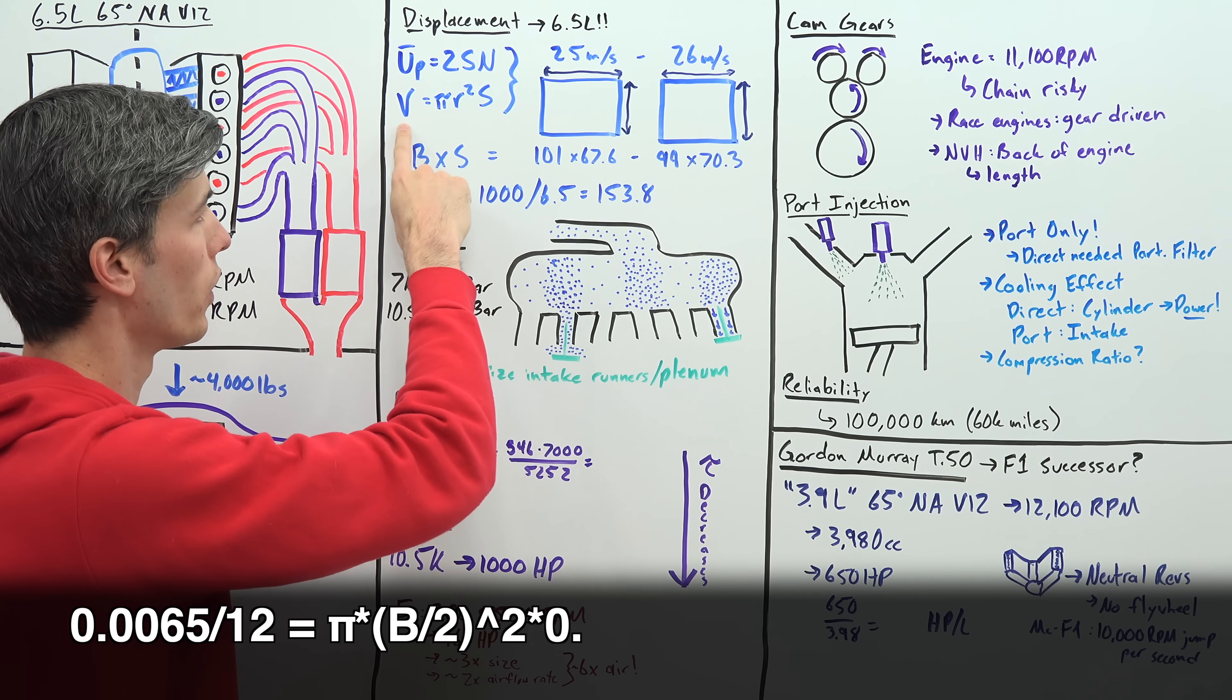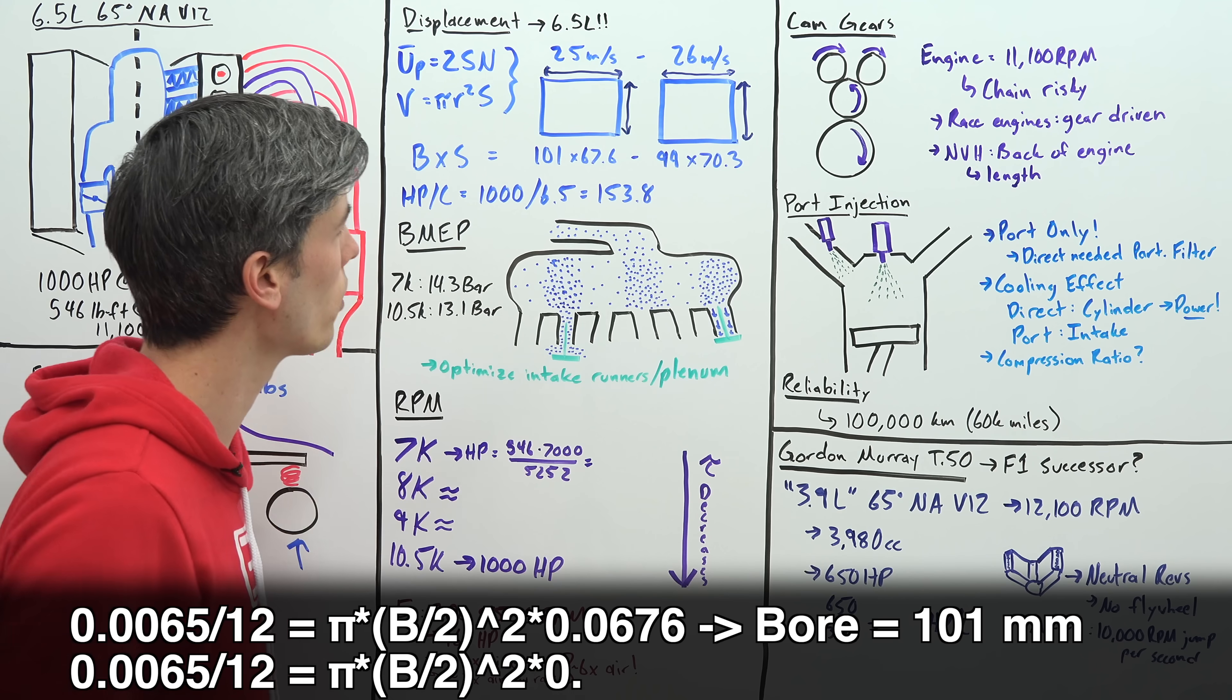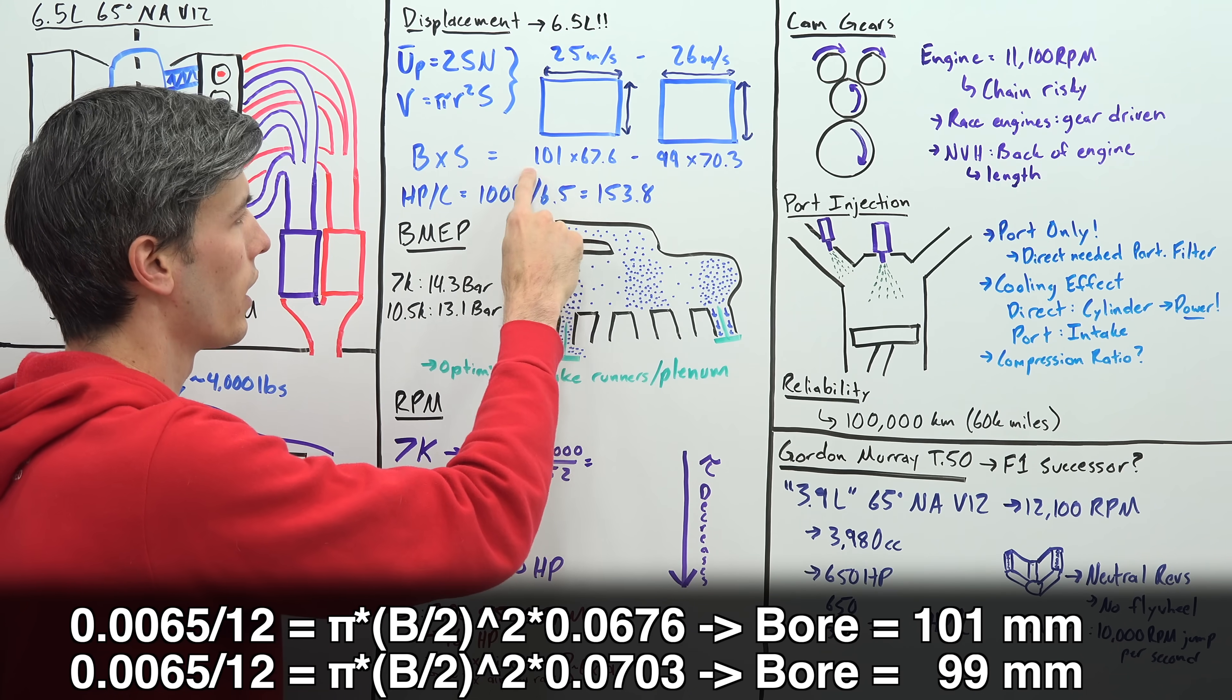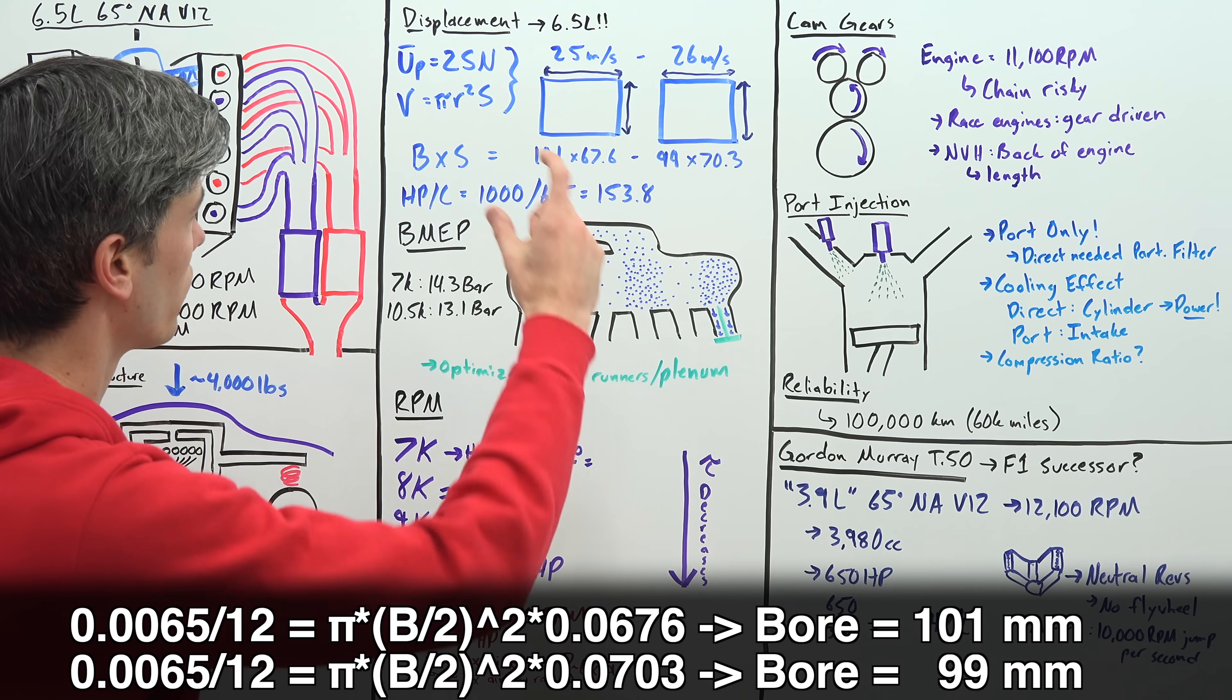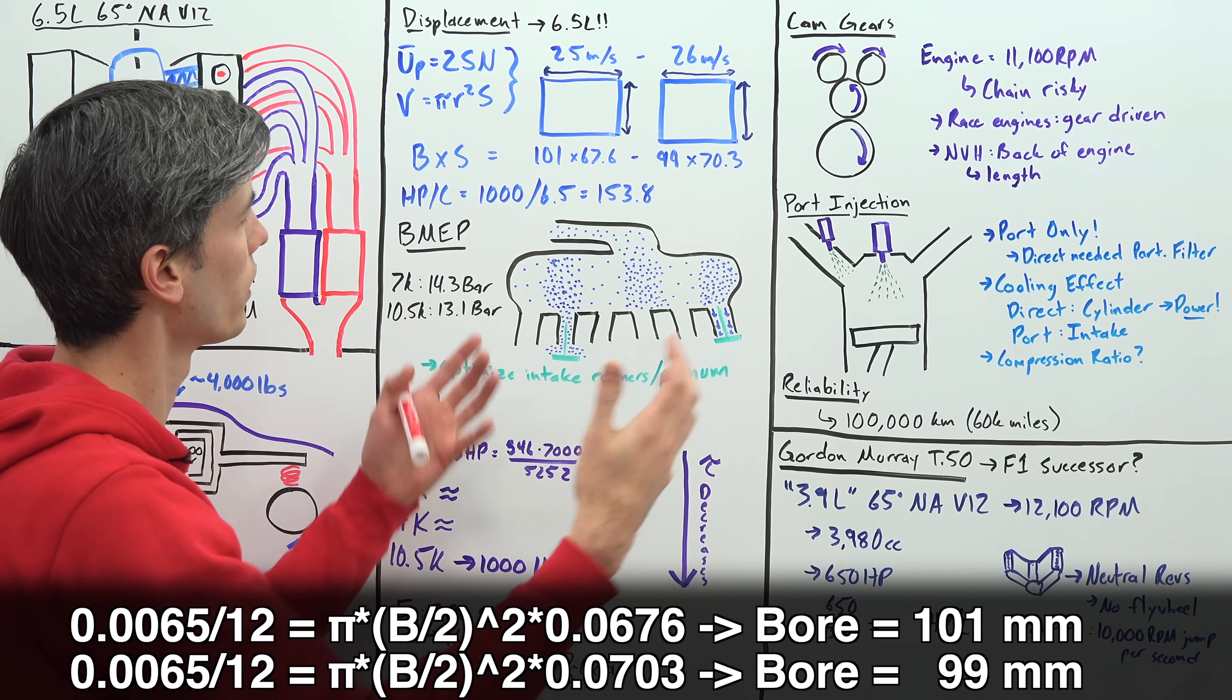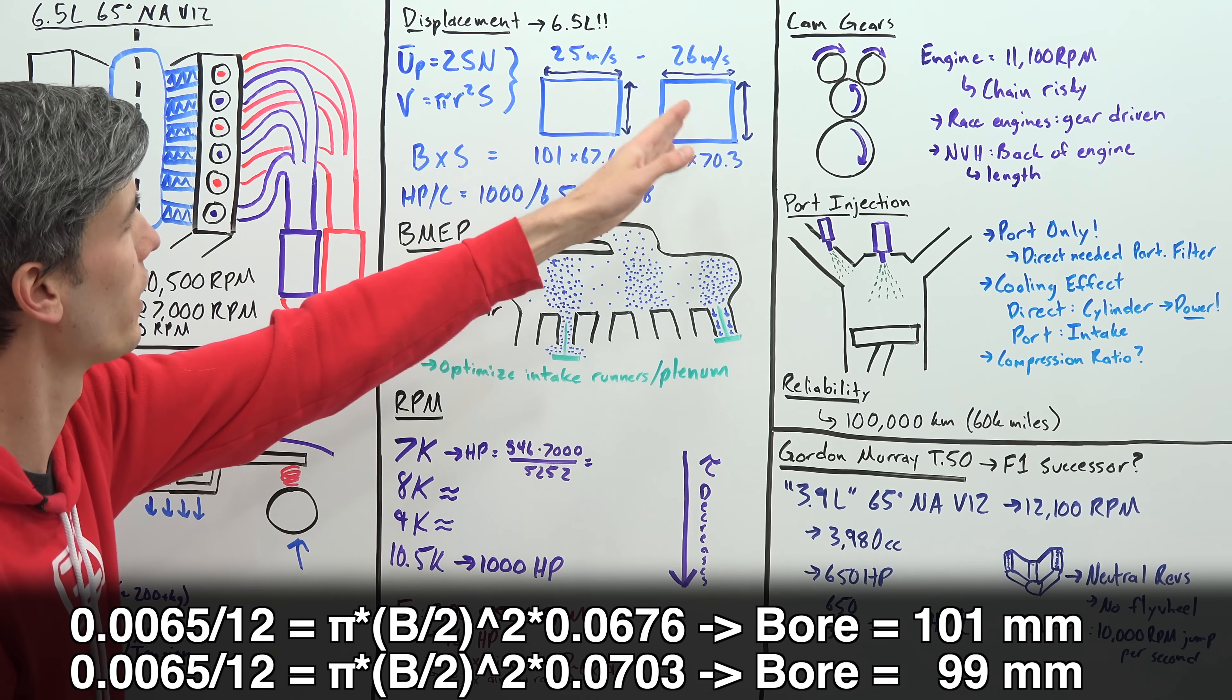The bore using volume equals pi r squared times stroke, you can calculate to be somewhere between 101 and 99 millimeters. So your pistons, the stroke path that they actually travel and their bore, somewhere in between this range right here.